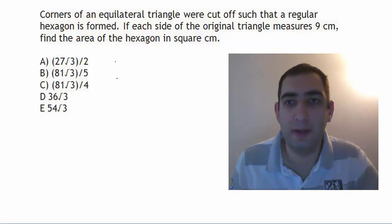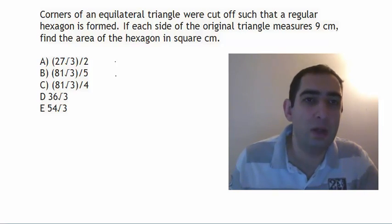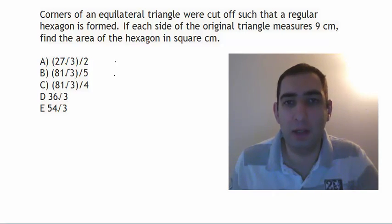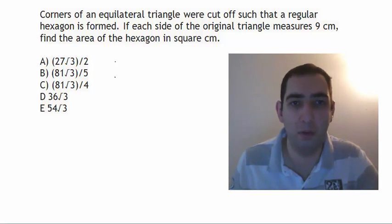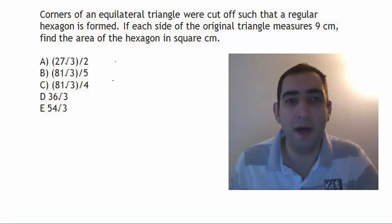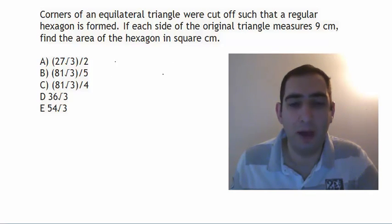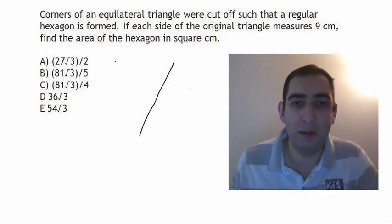Today we're going to solve a hard geometry problem. Corners of an equilateral triangle were cut off such that a regular hexagon is formed. If each side of the original triangle measures 9 centimeters, find the area of the hexagon in square centimeters.